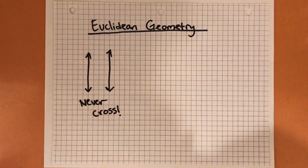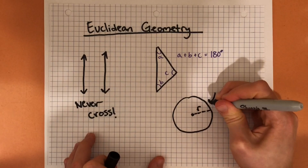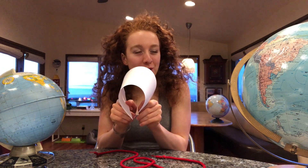Parallel lines never cross, the angles of a triangle add up to 180 degrees, and the circumference of a circle is 2 pi times the radius. But what happens when this flat plane that we know and love is no longer flat? Welcome to the realm of non-Euclidean geometry, where things get pretty weird. In non-Euclidean geometry, the shortest path between two points is no longer a straight line — it's something called a geodesic, which could be a curved trajectory between two points. We deal with geodesics all the time because we live on a curved planet.